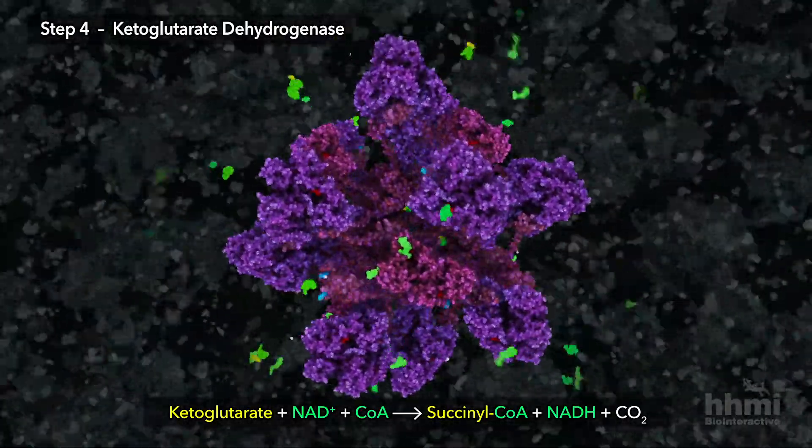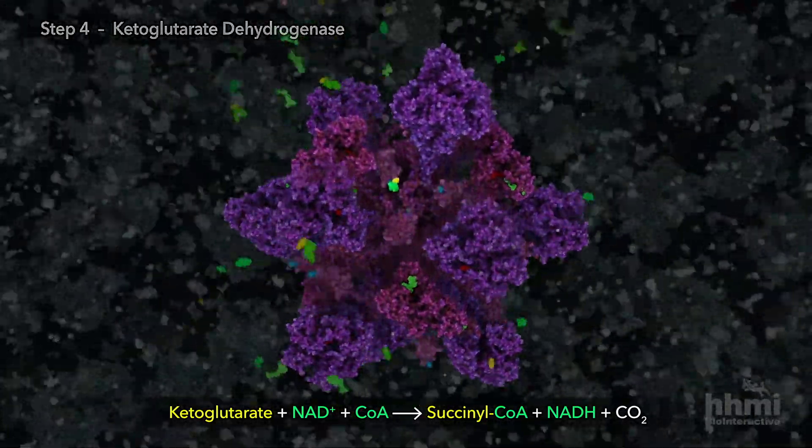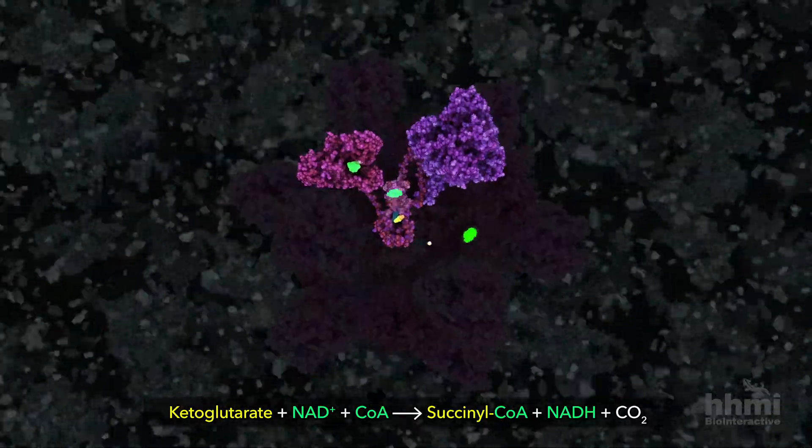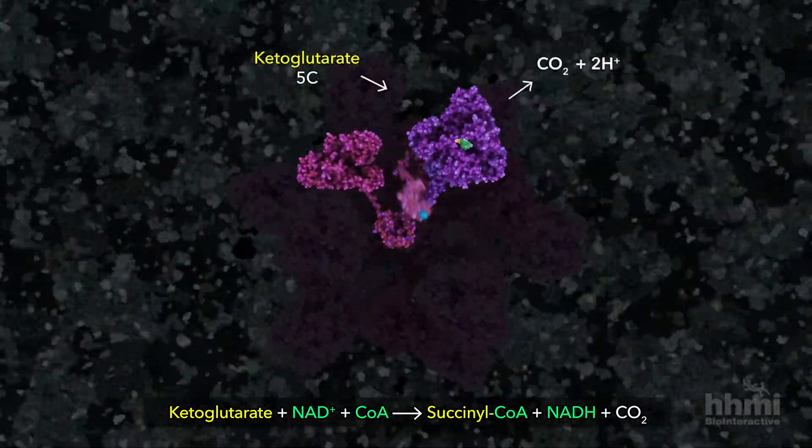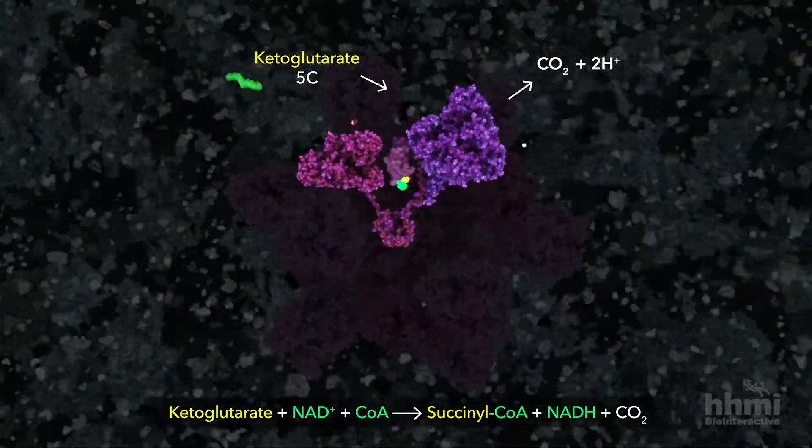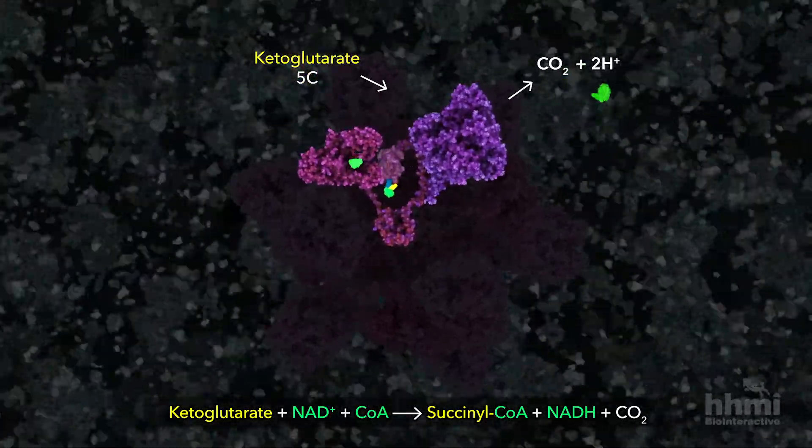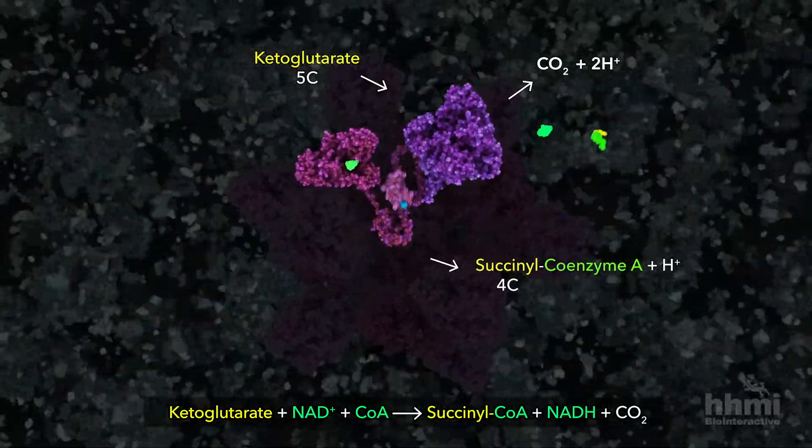The large complex is made with a repeating unit of three core enzymes, working in sequence to remove a carbon atom from ketoglutarate, generating carbon dioxide waste, then attaching four-carbon succinyl to coenzyme A.